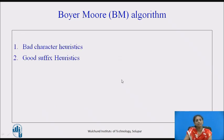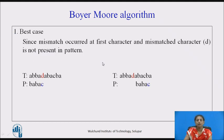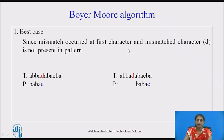We need to look at two things: bad character heuristics and good suffix heuristics. The ideal case is wherever a mismatch occurs, if that character is not present in the pattern, we can move the pattern completely.